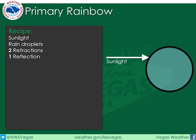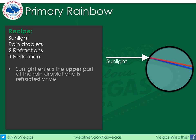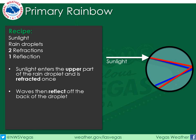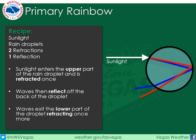Now we'll look at the recipe for creating a normal rainbow, also known as a primary rainbow. First, the ingredients: we'll need sunlight, indicated by the white arrow here, a rain droplet — the blue circle — as well as two refractions and a single reflection. Sunlight enters the upper part of the rain droplet and is refracted once. Note that only the red and blue wavelengths are shown in this diagram for simplicity. The waves then reflect off the back of the droplet, and finally exit through the lower part of the droplet, refracting one more time as they do.